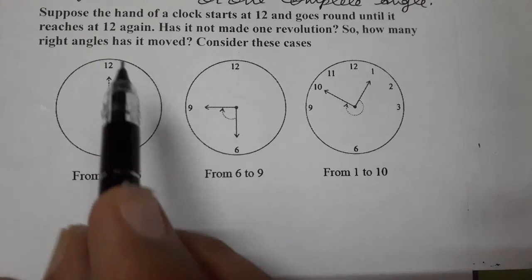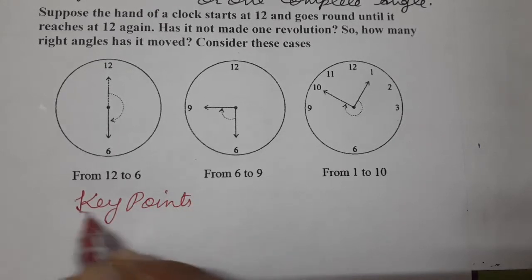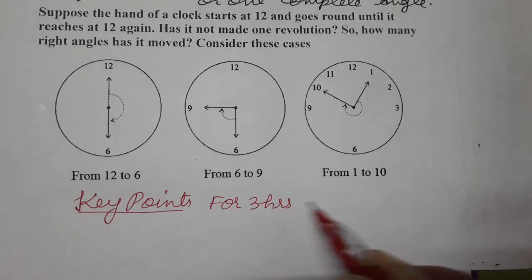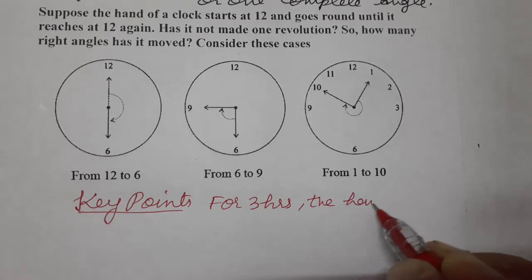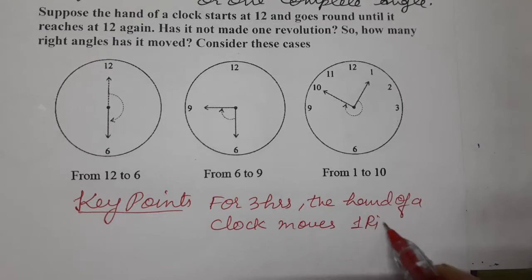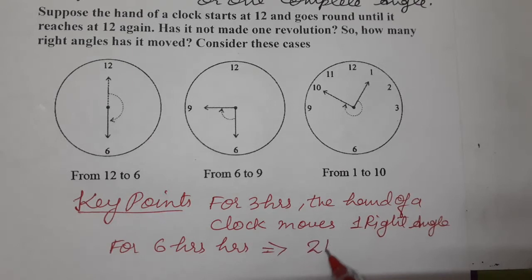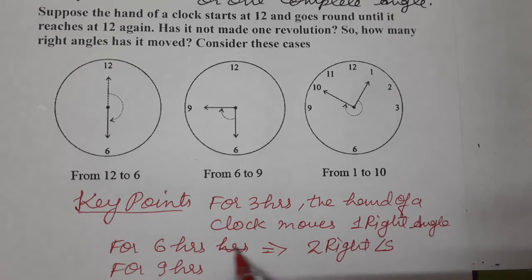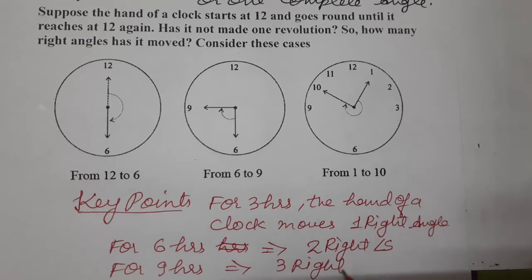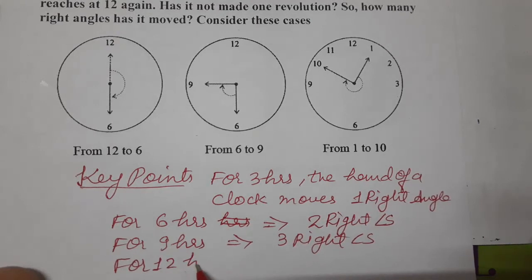So how many right angles has it moved? We have to write some key points. For three hours, the hand of a clock moves one right angle. For six hours, it is two right angles. For nine hours, it is three right angles. For twelve hours, it is four right angles.